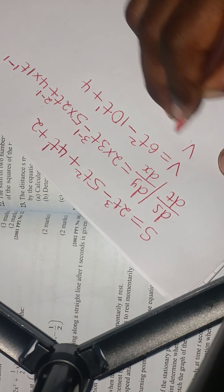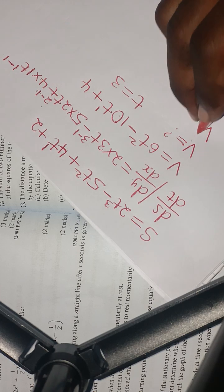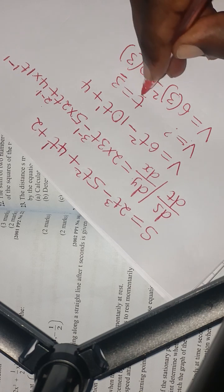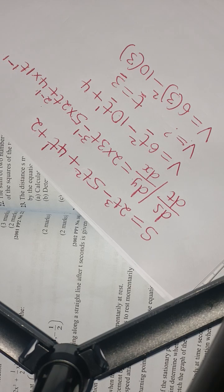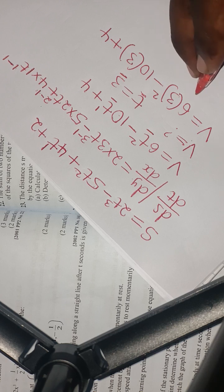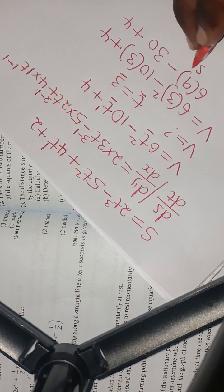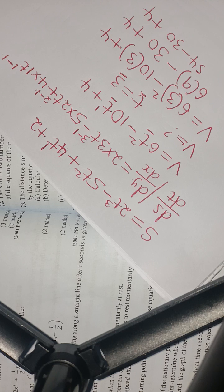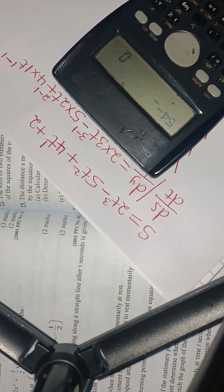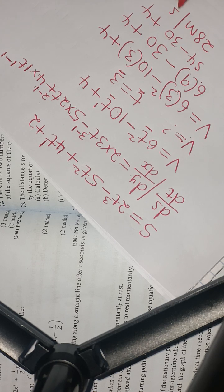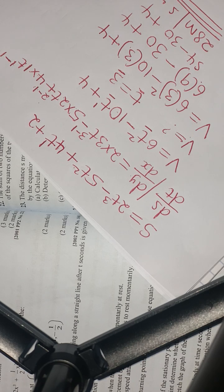Now substituting t = 3 into the velocity equation: v = 6(3)² − 10(3) + 4 = 6 × 9 − 30 + 4 = 54 − 30 + 4 = 28. So the velocity of the particle when t = 3 seconds is 28 meters per second.